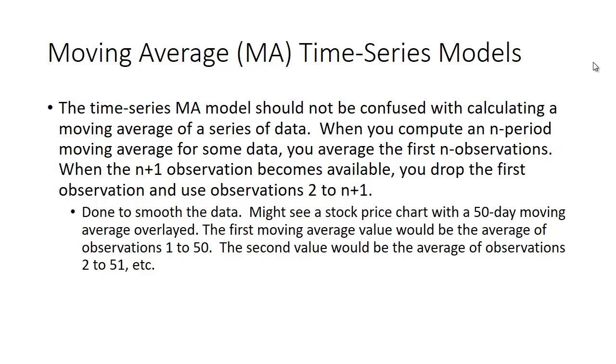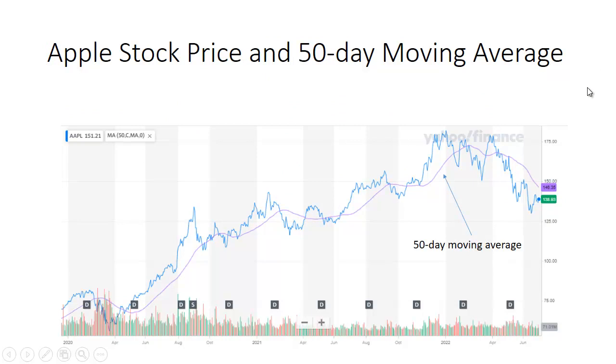So when you get a new observation, you drop the oldest one, you add the newest one. So here I have a stock price chart of Apple and its 50-day moving average. And I got this from Yahoo Finance. And many of these sites allow you to get the stock price chart and to overlay things, like a 50-day moving average. Some of them allow you to pick the days you want. So you can have a 100-day moving average or a 30-day moving average. I happen to have 50.